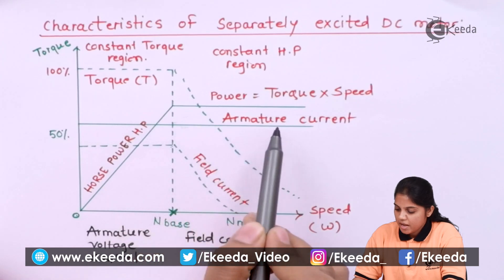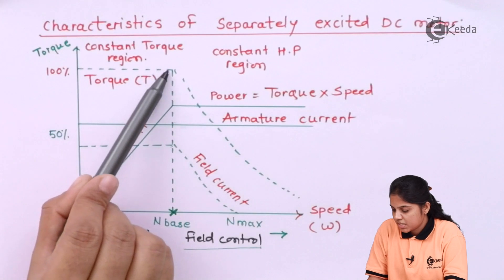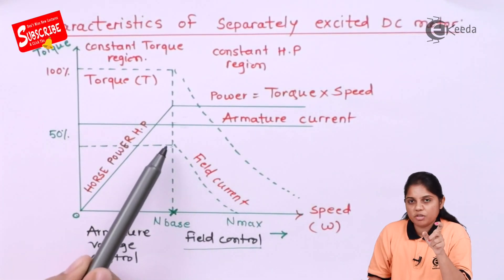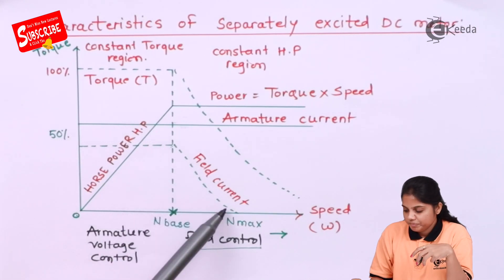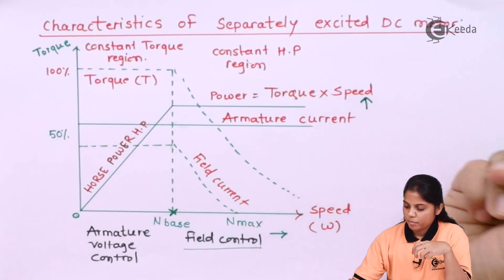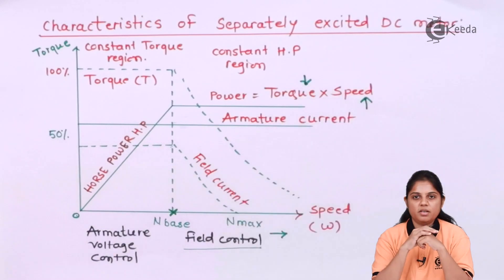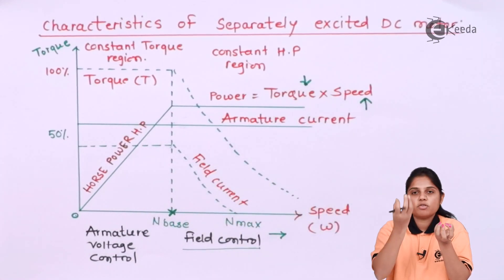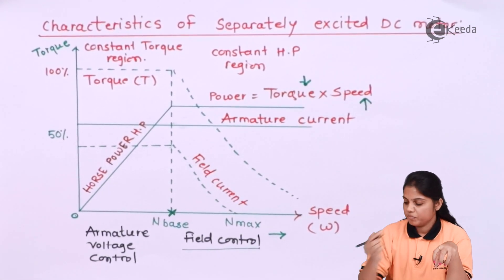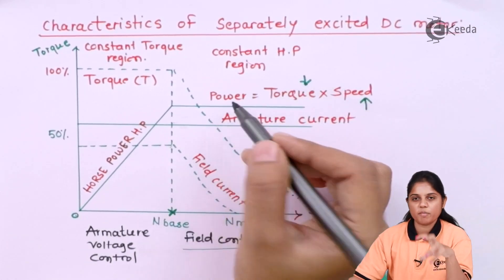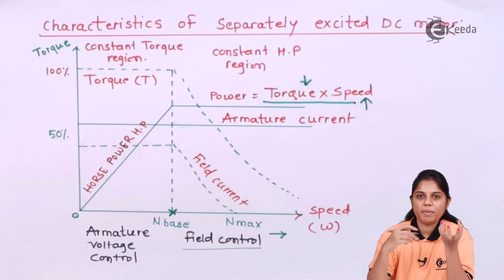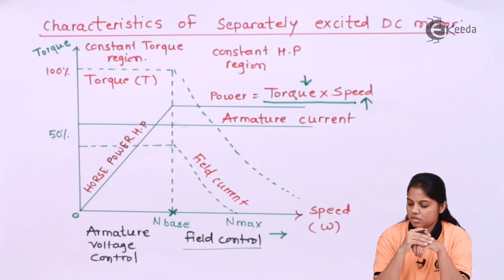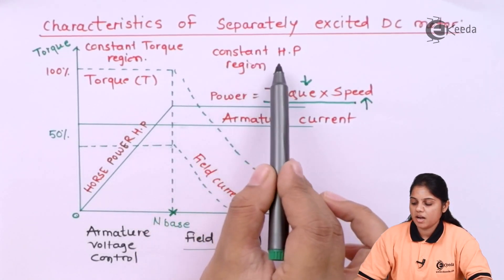As the field current decreases, the speed increases — the x-axis represents speed. At the same time, torque is also decreasing. With armature voltage fixed and field current decreasing, speed increases but torque decreases. Because of this, power remains constant: when torque decreases, speed increases, maintaining balance. Power equals torque multiplied by speed — if one parameter increases while the other decreases, the product remains constant.